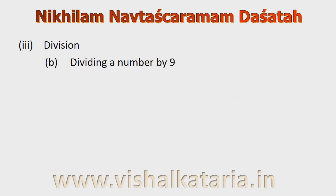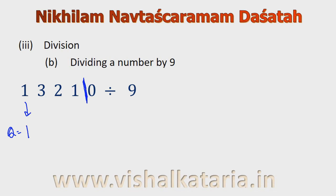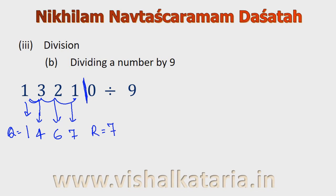Now let's divide a large number. We have 13210 divided by 9. The procedure is exactly the same. The quotient begins with 1. Then sum of 1 and 3 gives 4. Cumulative sum: 4 plus 2 is 6, then 6 plus 1 is 7. The remainder will be 7 plus 0 which is 7. So if we divide 13210 by 9, the quotient is 1467 and the remainder is 7.